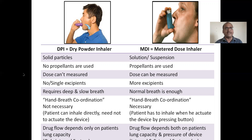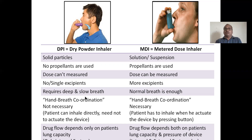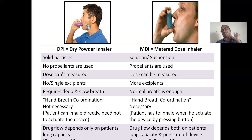Dry powder inhalers have only solid particles — the name itself makes it clear. For MDI, you will get a suspension or solution. No propellants are used in DPI, whereas propellants are used in MDI, just like aerosol. Dose cannot be measured in DPI — that is a basic difference. In MDI, dose can be measured. DPI requires no or only a single excipient; MDI uses a number of excipients. DPI requires a deep and slow breath, whereas for MDI, normal breath is enough because it is a pressurized system — once you press, pressure will deliver the drug from the device into your mouth.